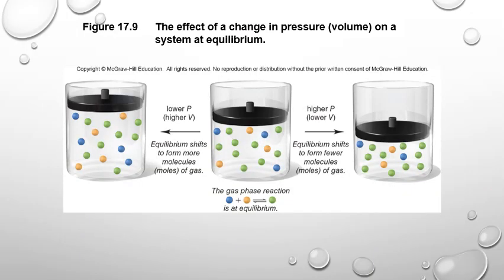In the diagram, the middle container shows the system at equilibrium. Increasing the volume (lower pressure) spreads particles further apart, causing fewer collisions with container walls. To restore pressure, some green product molecules transform into blue and orange reactant molecules — increasing the particle count from 15 to 16 and raising the collision frequency back to the equilibrium value.